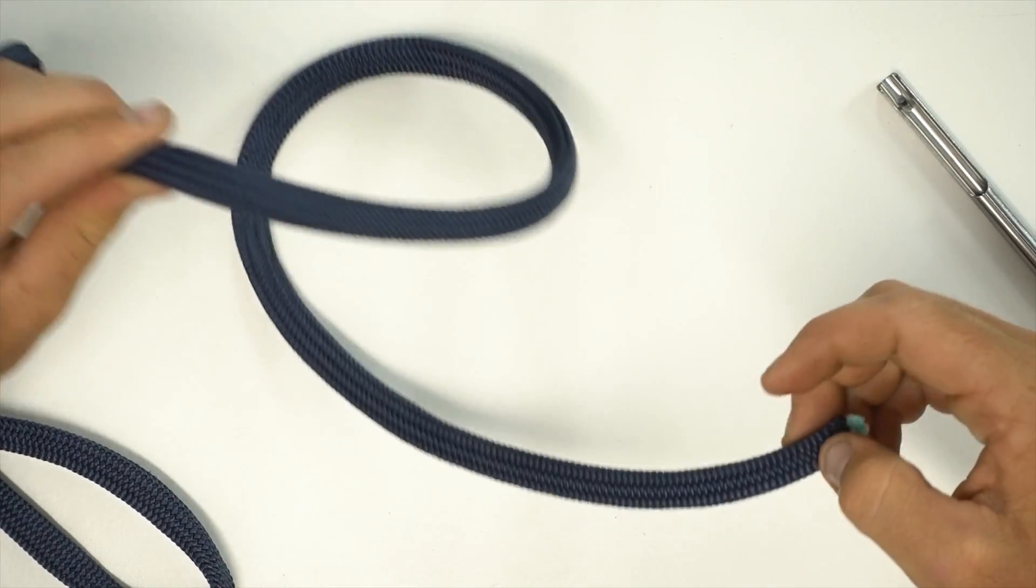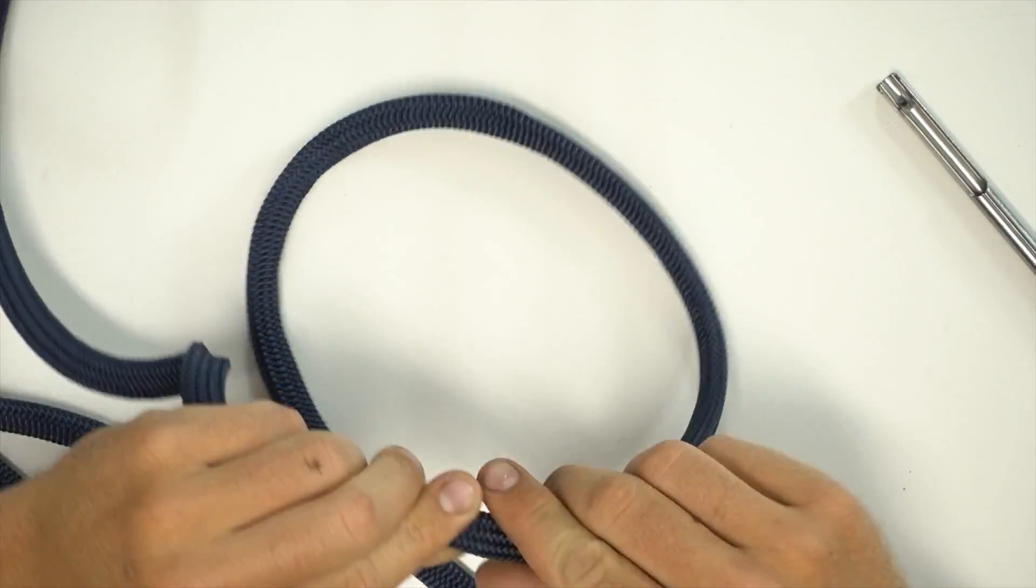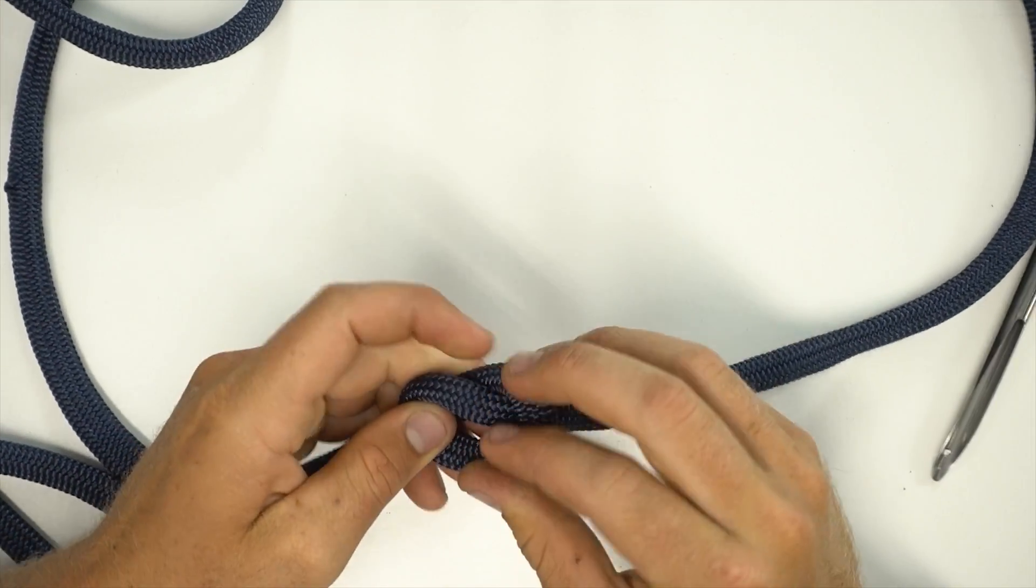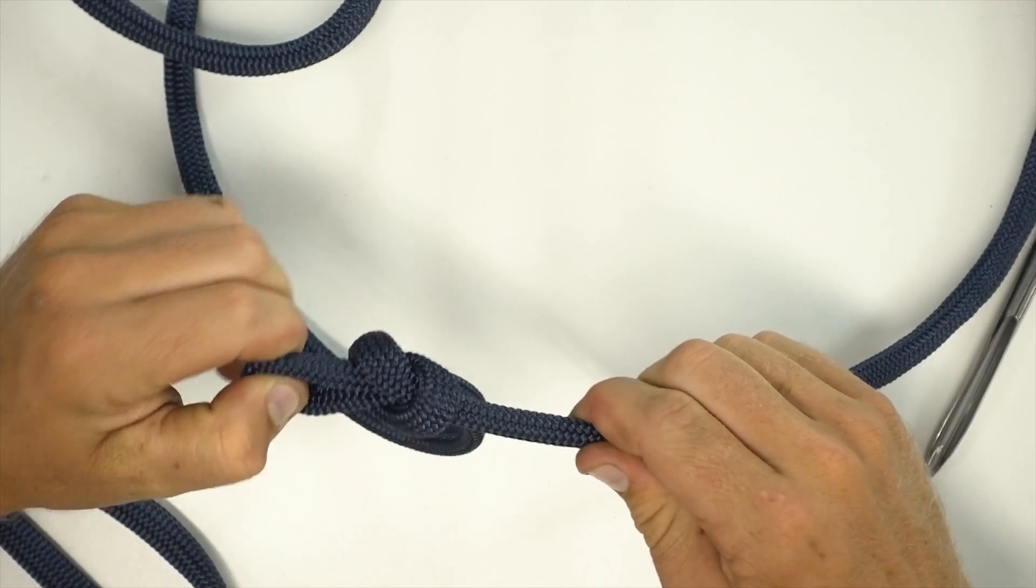The first thing we do is tie a knot a little ways away from the end of our line so that whatever we do to the cover and the core will not affect the alignment of the rest of our halyard. A simple slip knot works just fine.